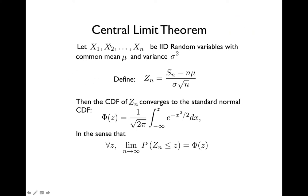Here is the formal statement of the central limit theorem: suppose you have n variables x1 to xn that are iid with common mean mu and common variance sigma squared. If you define the normalized version of the sum Zn, then the cumulative distribution function of Zn converges to that of the standard normal CDF. The convergence is in the sense of cumulative distribution probability — the CDFs converge to each other.